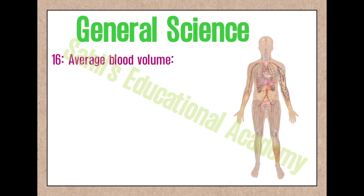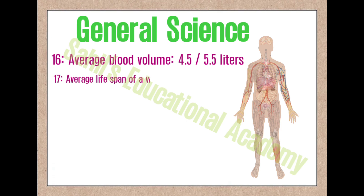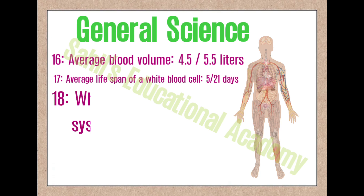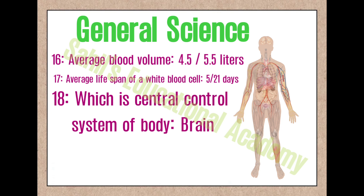16. Average blood volume: 4.5–5 liters. 17. Average lifespan of a white blood cell: 5–21 days. 18. Which is the central control system of the body? Brain.